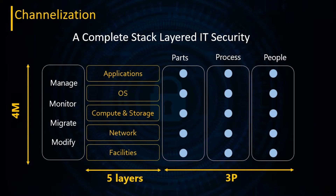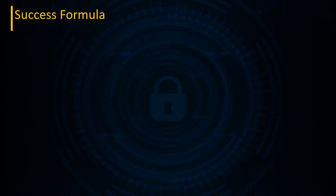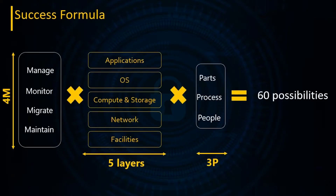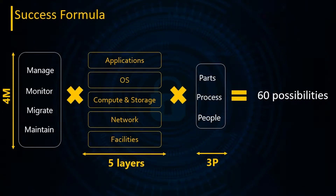It's no coincidence we put numbers in there, because these all add up to at least 60 possibilities. I think it's important to realize that it's not sufficient to just put in a firewall, because you're probably only looking at one layer of the network, only looking at a part, and maybe only managing it — that's only one of those 60 possibilities.